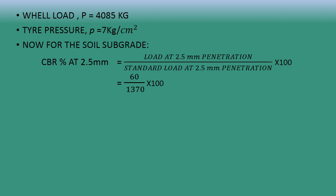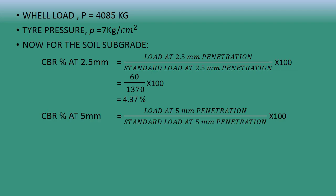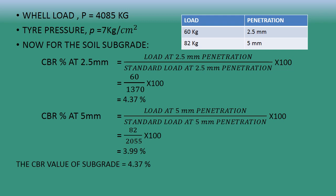CBR at 2.5 mm = (load at 2.5 mm penetration / standard load at 2.5 mm penetration) × 100 = (60 / 1370) × 100 = 4.37%. CBR at 5 mm = (82 / 2085) × 100 = 3.99%. Since 4.37% is greater, the CBR value for the soil subgrade is taken as 4.37%.